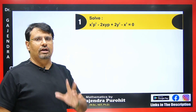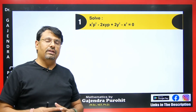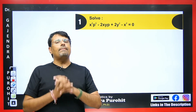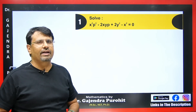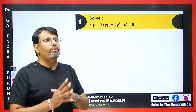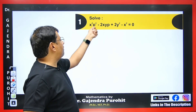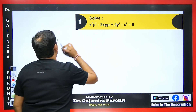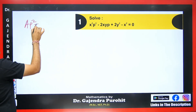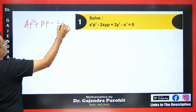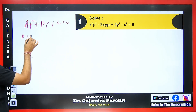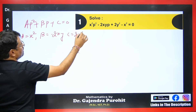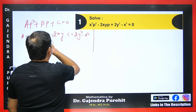Now look at this example. The question arises: how will you determine in the exam whether the equation is solvable for P, solvable for X, or solvable for Y? Whenever we have a differential equation of higher degree and first order, we check if it can be factored in terms of P. You can see this is a quadratic equation in P, which means we can factorize it in terms of P.